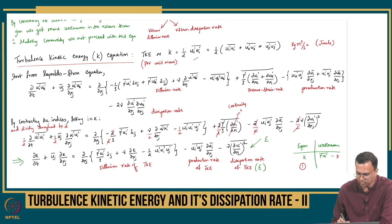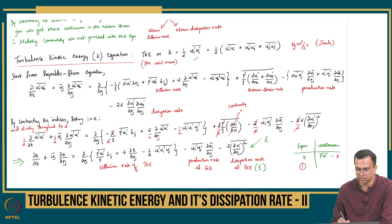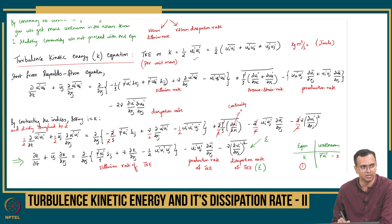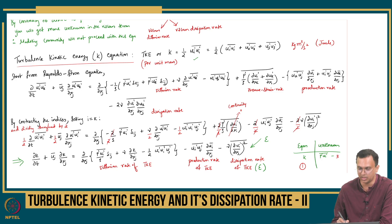The viscous diffusion rate is not a problem because it depends on the turbulence kinetic energy k itself. That is why the modeling community likes this equation. The way we have derived it, the transport of k due to viscosity depends on k itself, so one can iteratively solve this in CFD techniques. So this is not an unknown for us.